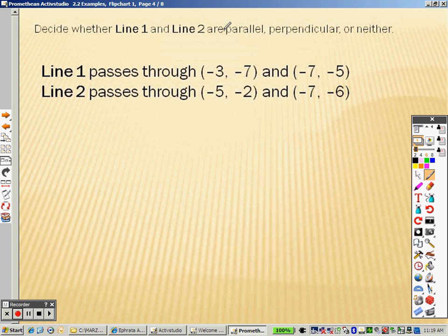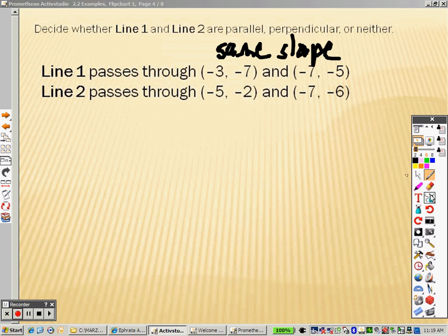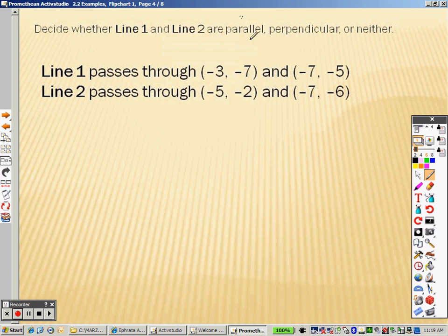First of all, we need to understand what each of these means. Parallel means that they have the same slope. That's what that means. Perpendicular means that they have opposite reciprocals. And what does that mean?